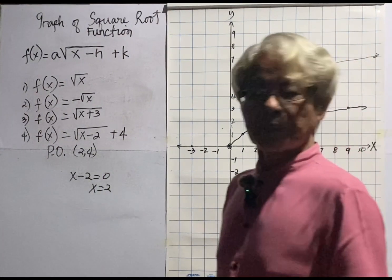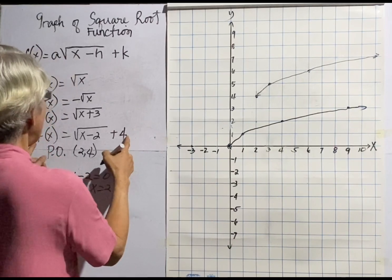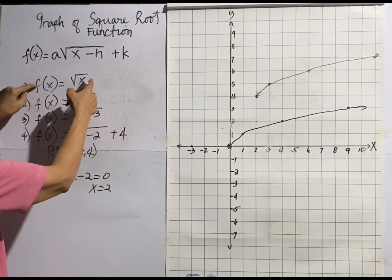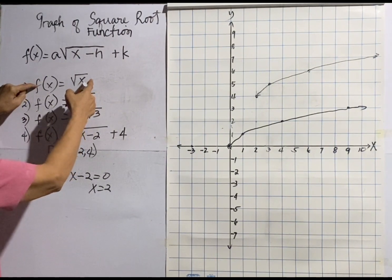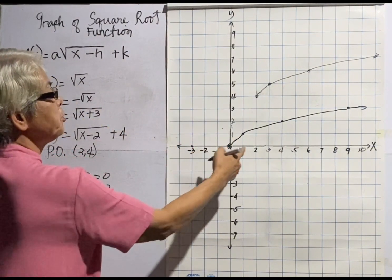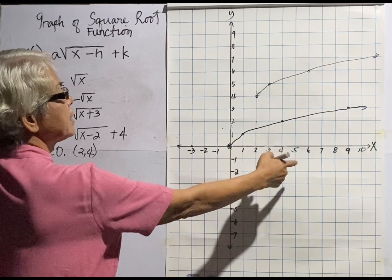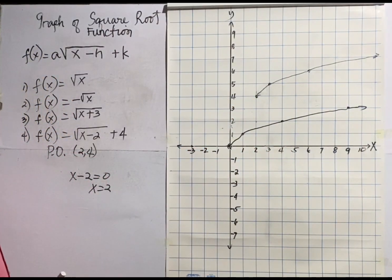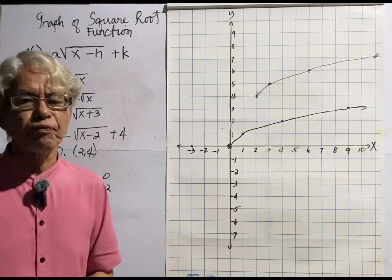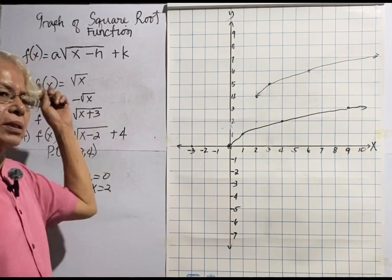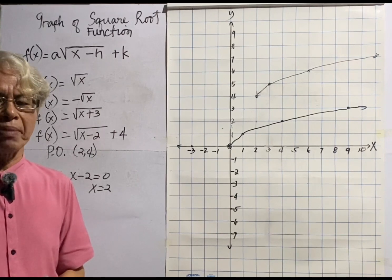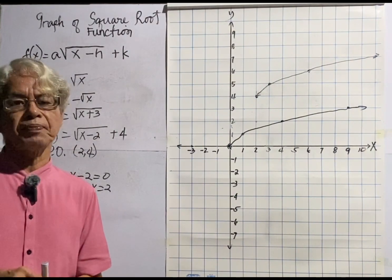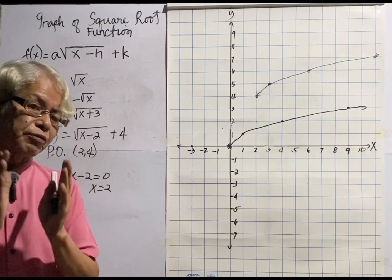The graph of this function is the same as the graph of the parent function, only it is shifted two units to the right and four units above the x-axis. I hope you find graphing the square root function easy. Thank you very much.